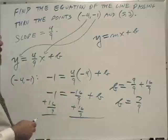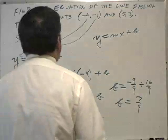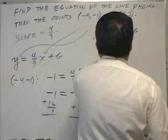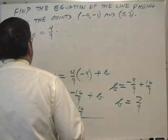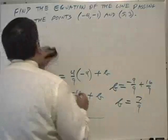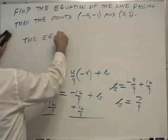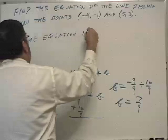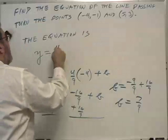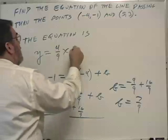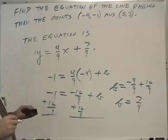Now we can finish the problem by writing the equation. The equation is y equals 4 ninths x plus 7 ninths, period.